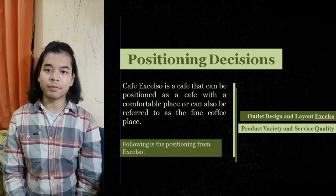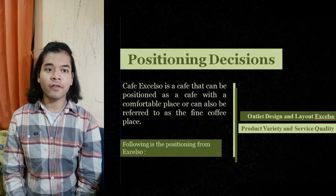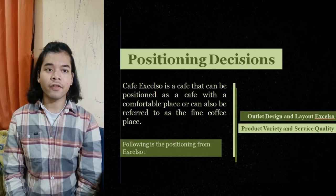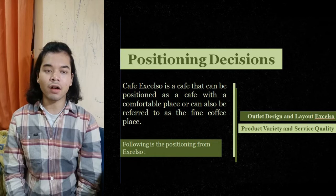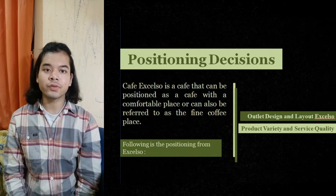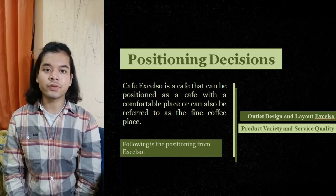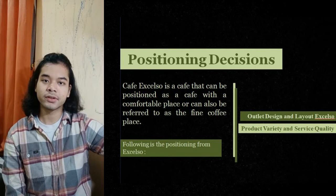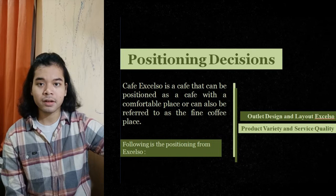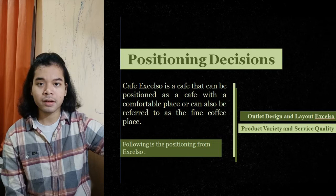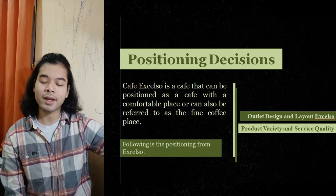Regarding positioning decision, Excelso Cafe is positioned as a cafe with a comfortable place. The cafe has a unique concept — a menu mostly of coffee, snacks, and drinks, where coffee is associated with freshness and a comfortable atmosphere. In terms of outlet design and layout, Excelso is positioned as a fine coffee place. It is important for Excelso to maintain each standard design at each outlet and show corporate identity so customers can easily recognize their favorite drinking place.